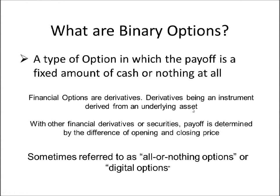What are Binary Options? Binary Options are a type of option in which the payoff is a fixed amount of cash or nothing at all. So unlike other financial derivatives or securities, where payoff is determined by the difference of opening and closing price, when we profit from a binary option, a profit is a pre-agreed amount between an individual and the broker, or it's a loss. Sometimes Binary Options are referred to as all-or-nothing options or digital options.